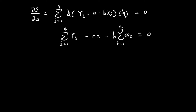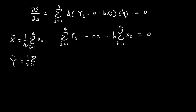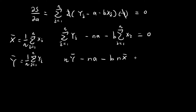Now I'm going to introduce two terms to simplify the notation. I'll define the sample mean of x as the sum of all the x terms divided by n, and the sample mean of y as the sum of all the y terms divided by n. Once defined, I can express the sum of y terms as n times the sample mean of y, and the sum of x terms as n times the sample mean of x.